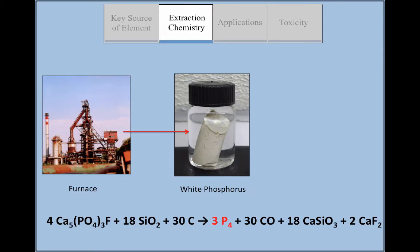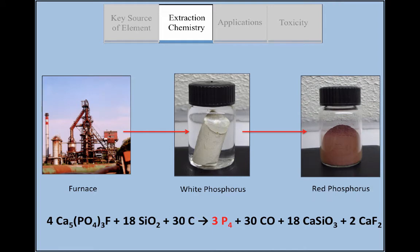The product is then condensed into a white powder under water to prevent oxidation by air. However, even under water, the white phosphorus converts to the more stable red phosphorus allotrope.